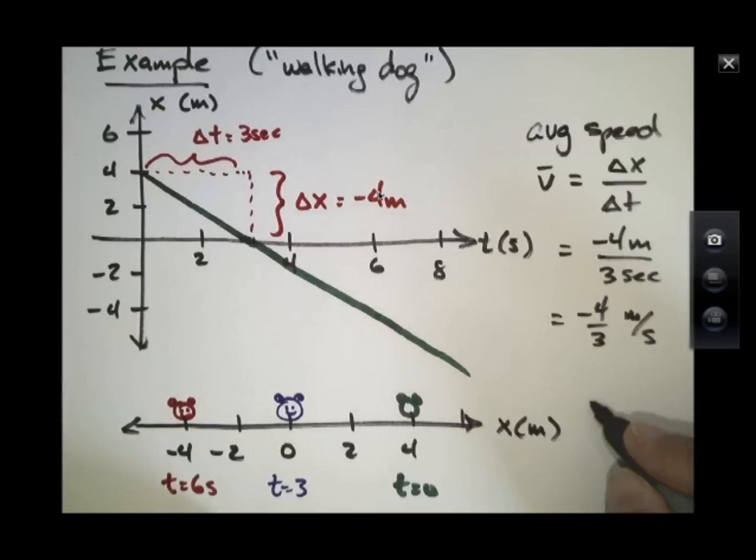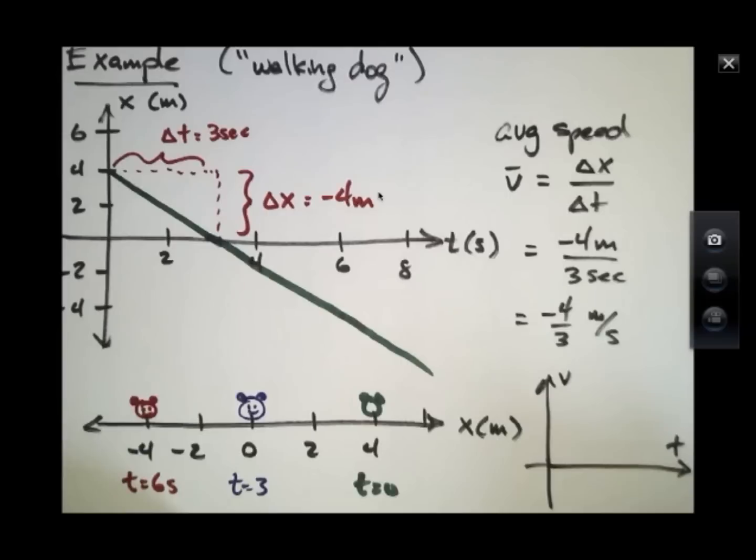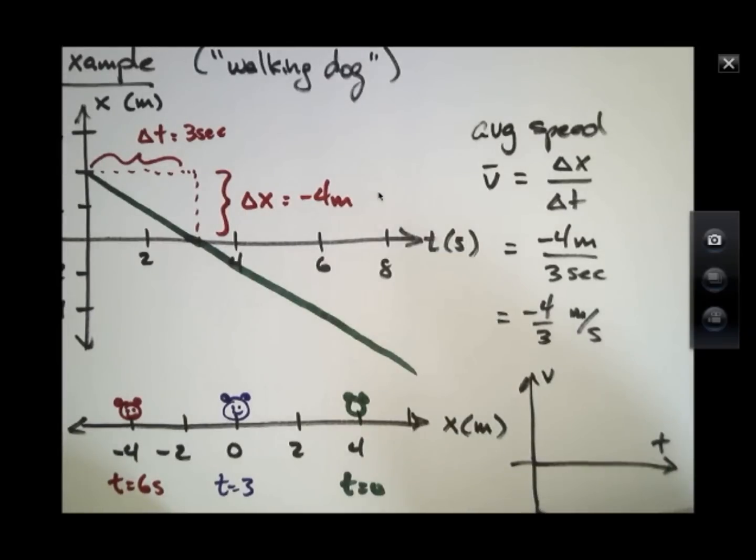If I had graphed what is its speed, this speed or this velocity would have been a simple number all the way through. It would be minus four thirds. The velocity is measured in meters per second.